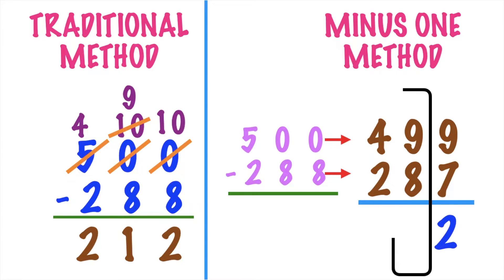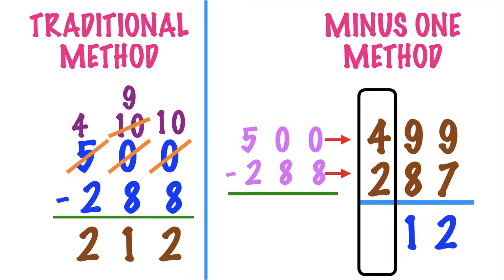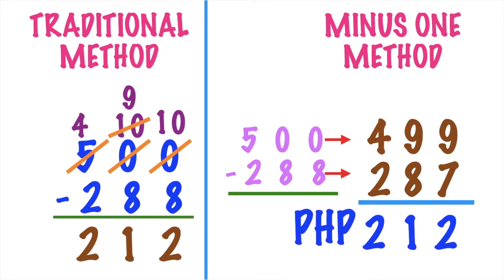Then 9 minus 8 equals? Good job, children — it's 1. Then 4 minus 2 equals? Very good, it's 2. So his change is P212.